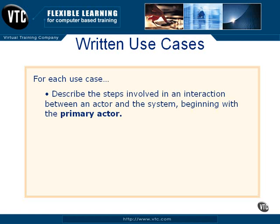For each written use case, describe the steps involved in an interaction between an actor and the system, beginning with the primary actor — the one who initiates the use case. In the ATM example, it's the customer who inserts his card into the machine. You want to start with the main success scenario, sometimes informally called the happy path — a description of the steps back and forth between the actor and the system when everything works as it's supposed to, from when the customer inserts his card to when he has the cash in his hand.